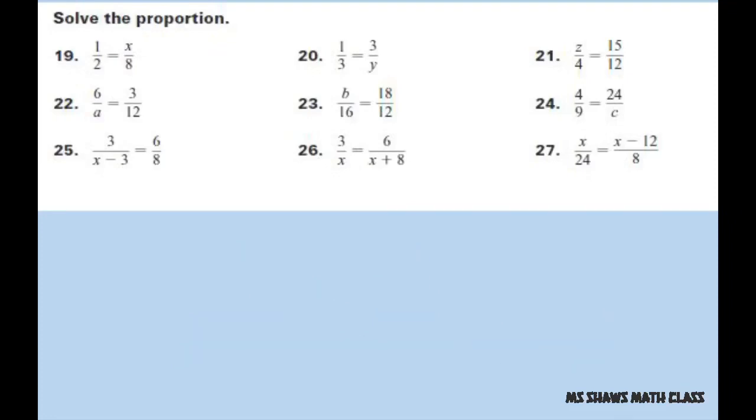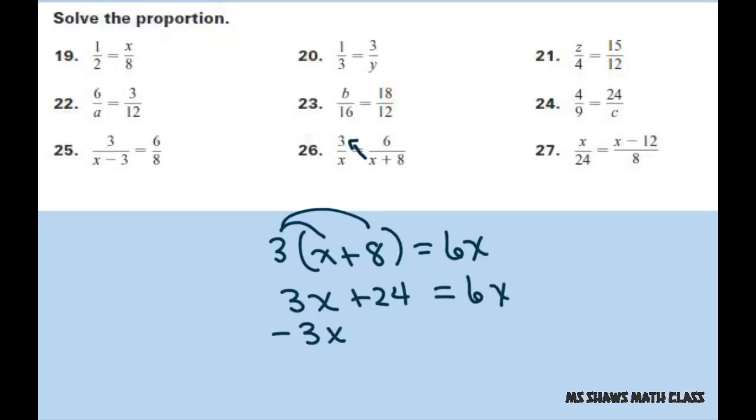And the next one, we have 3 crossing up here. 3 times (x plus 8) equals 6x. The left hand side is going to be 3x plus 24. You distribute here, equals 6x. Subtract 3x from both sides.